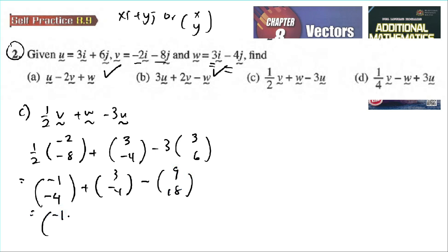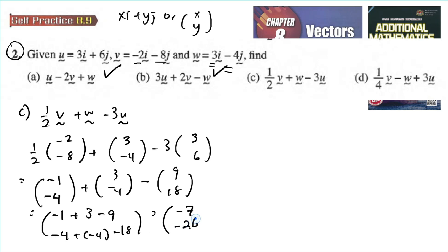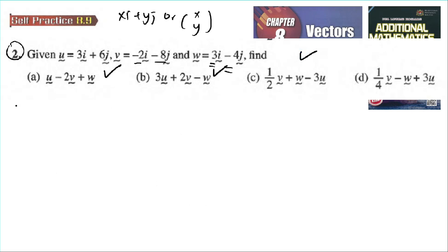Combining components: for x, negative 1 plus 3 gives 2, then 2 minus 9 gives negative 7. For y, negative 4 minus 4 gives negative 8, then negative 8 minus 18 gives negative 26. So the answer is negative 7i minus 26j.